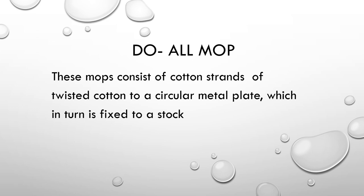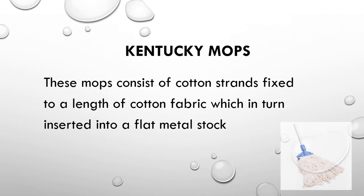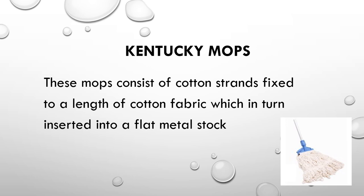Do-all mops consist of cotton strands of twisted cotton attached to a circular metal plate, which is fixed to a stock. They work well to clean up small messes and to generally mop floors. Kentucky mops are mostly found in hotels and consist of cotton strands fixed to a length of fabric inserted into a flat metal stock. They are used for wet cleaning of large hard and smooth surfaces, are even more absorbent than do-all mops, and are machine washable.